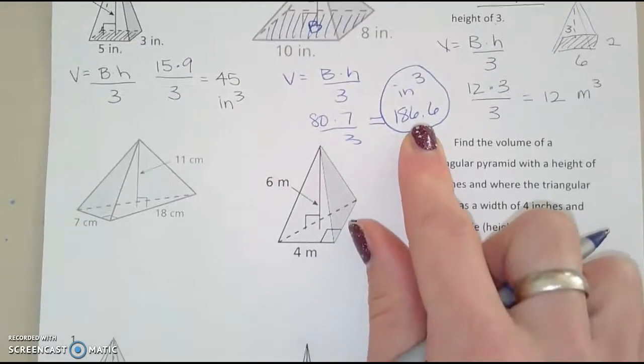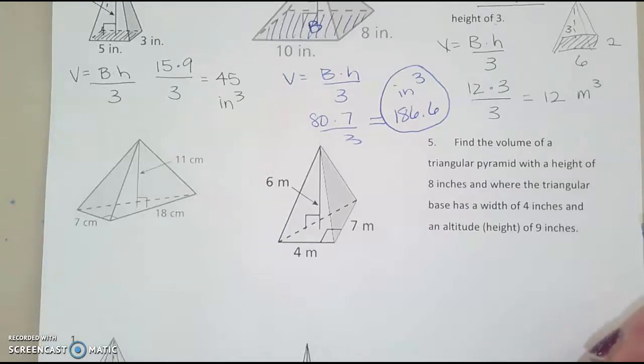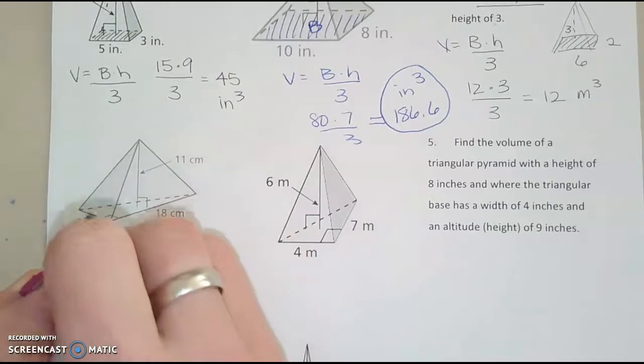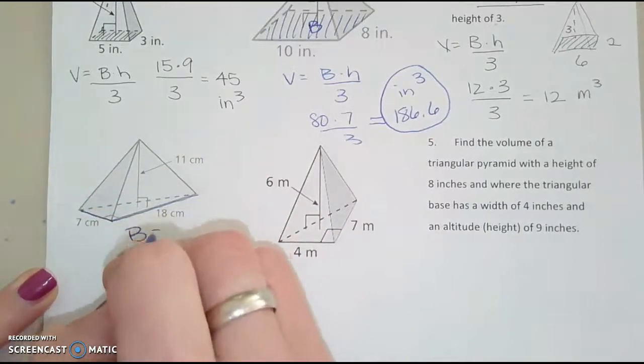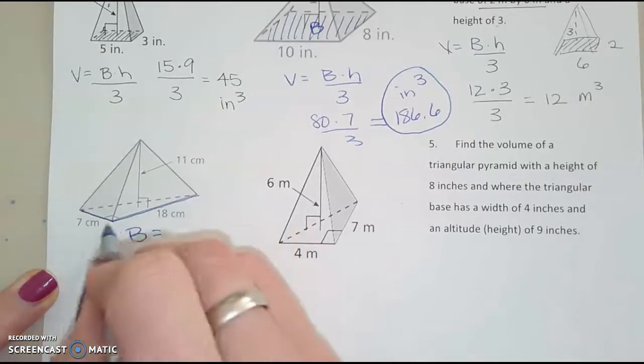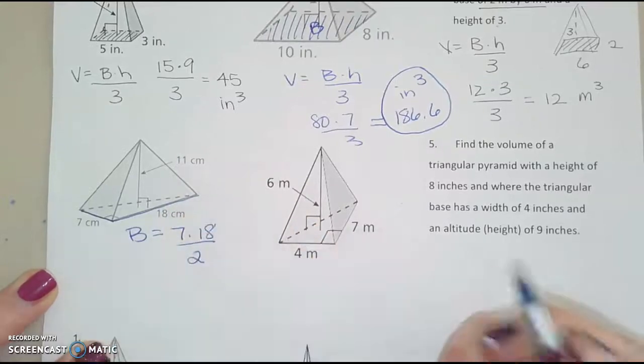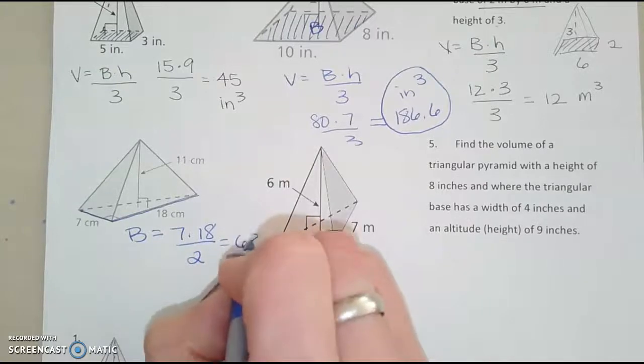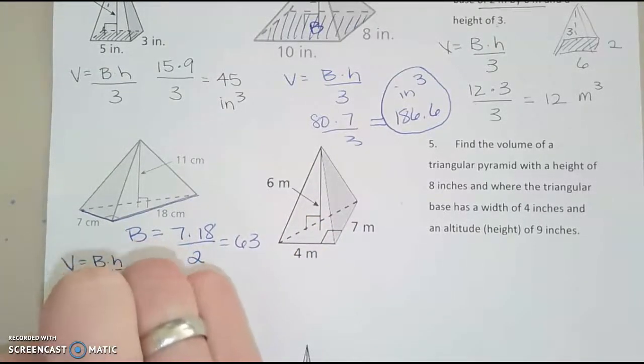Okay, so let's try a triangular pyramid. Formula is still going to be the same. Capital B times H divided by 3. So in this case, now we have triangles for the bases. So capital B here is going to be a triangle. Looks like I have a base of 7 and a height of 18, but it's a triangle, so divided by 2. And I get that that base is 63. So now, volume, capital B times H divided by 3.